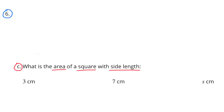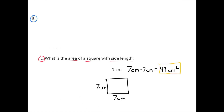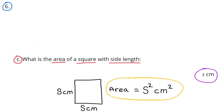6C: What is the area of a square with side length 3 centimeters? Area equals base times height, so 3 times 3 equals 9 centimeters squared. For 7 centimeters: 7 times 7 equals 49 centimeters squared — meaning inside that 7-by-7 square you would find 49 squares each measuring 1 centimeter by 1 centimeter. For side length S centimeters: S times S, or S squared, centimeters squared.